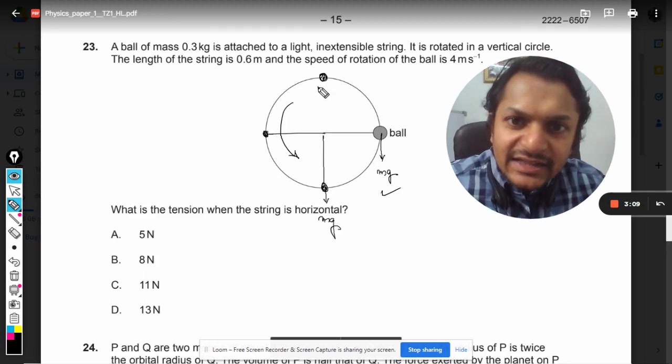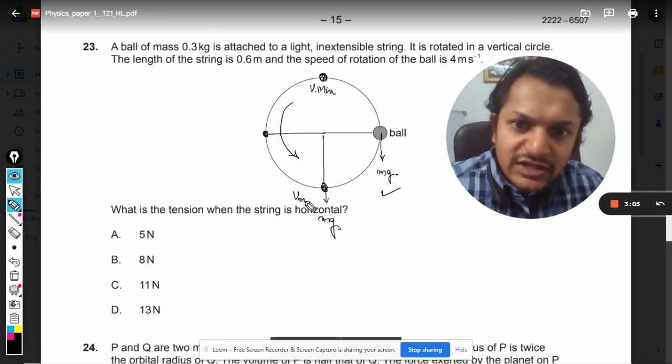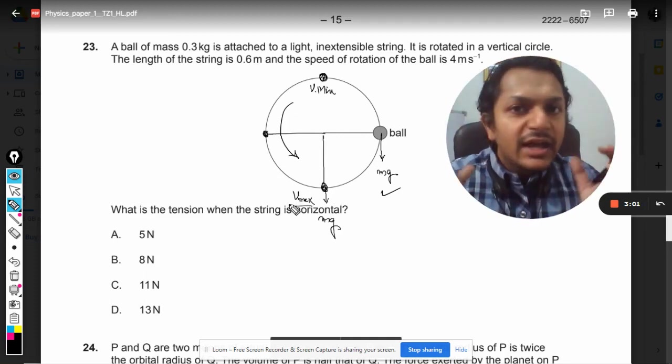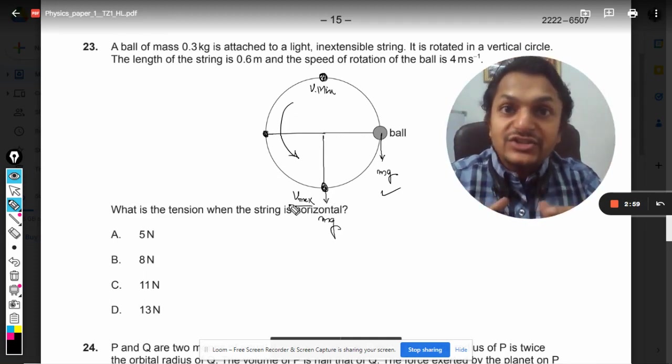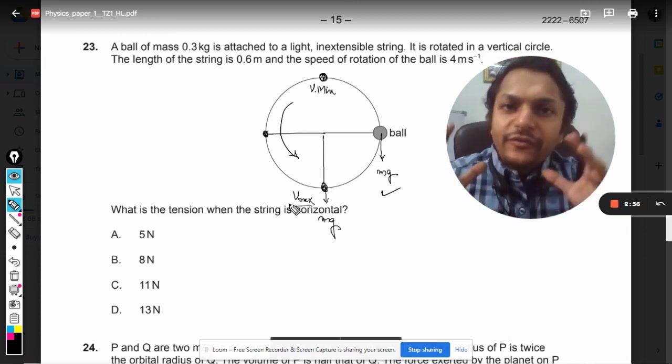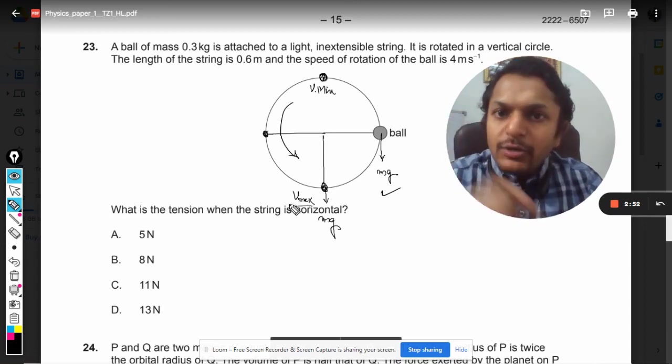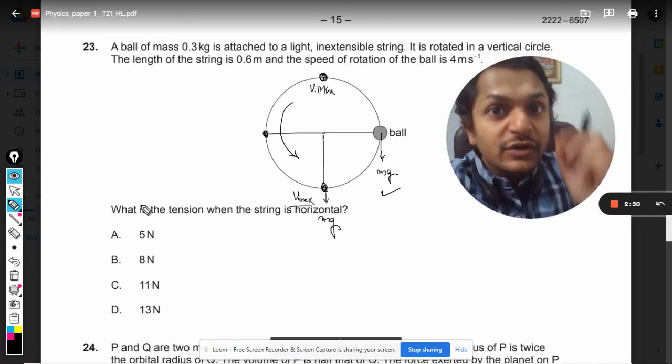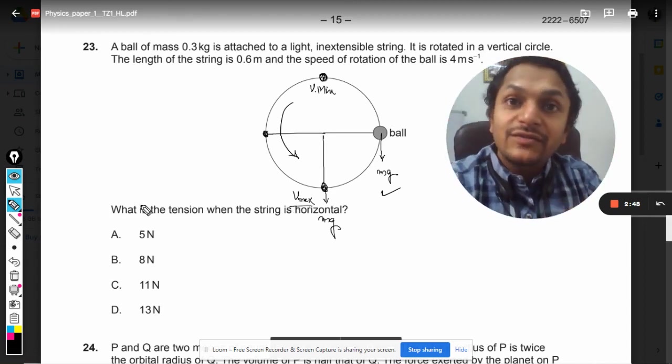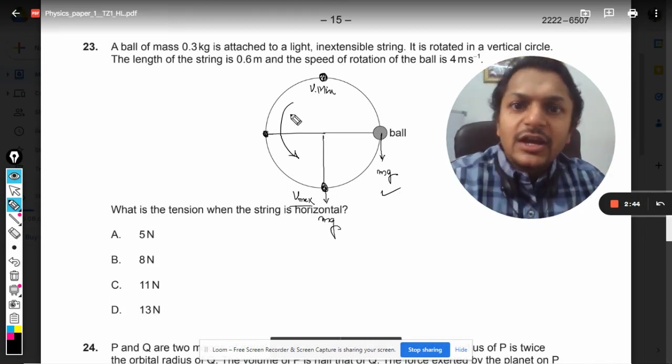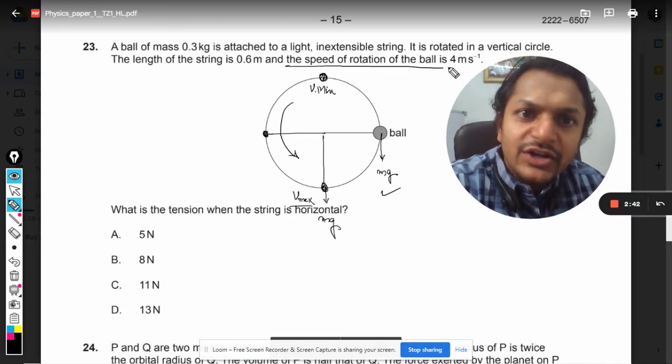So velocity is a variable in vertical circles where the bob is allowed to freely move under the effect of gravity. But now the problem is they are talking about the vertical circle but they are not giving freedom to the ball to move according to gravity because they have given that the speed of rotation of the ball is 4.